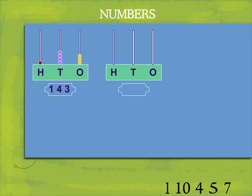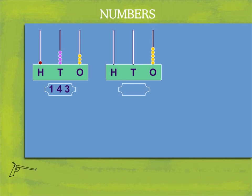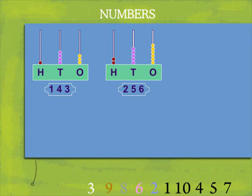Here is another one: one, two, three, four, five, six ones. One, two, three, four, five tenths. And two hundredths is two hundred and fifty six.